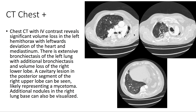On CT of the chest with contrast, we again can appreciate significant volume loss in the left hemithorax with leftward deviation of the heart and mediastinum. There's extensive bronchiectasis of the left lung.